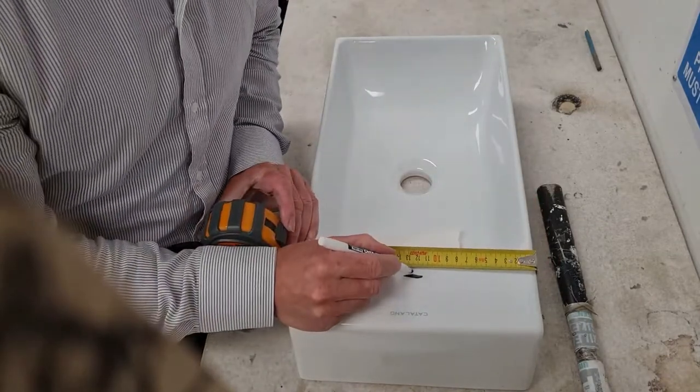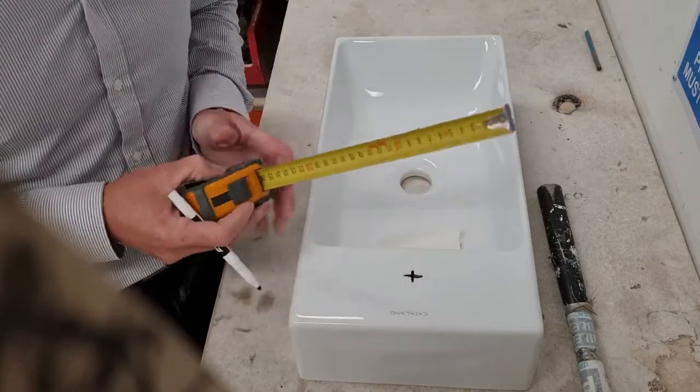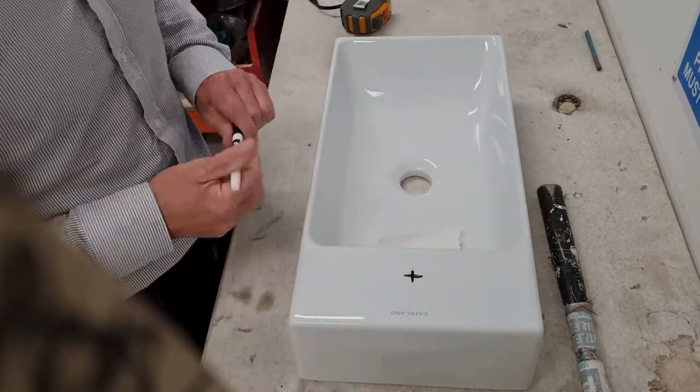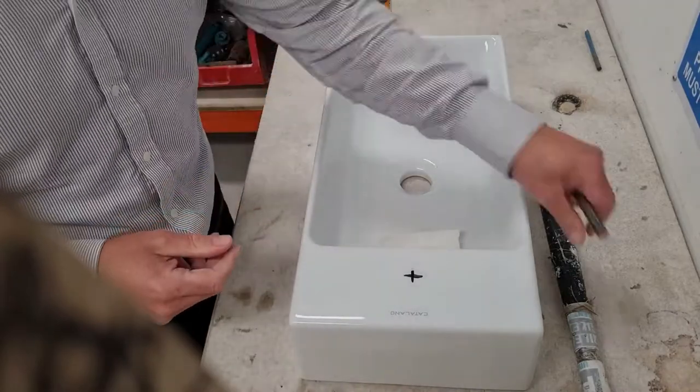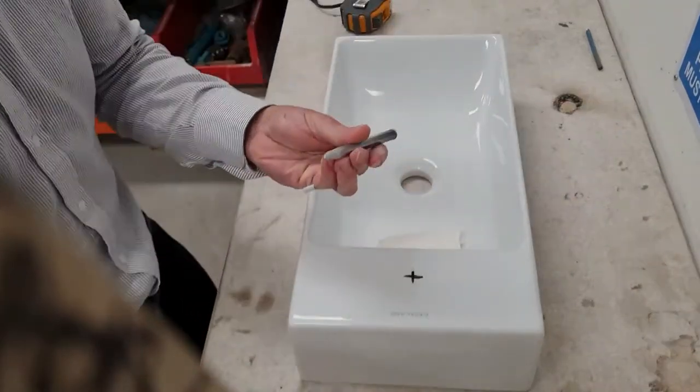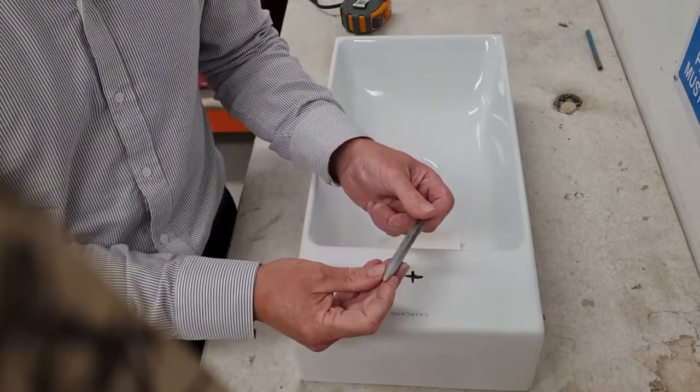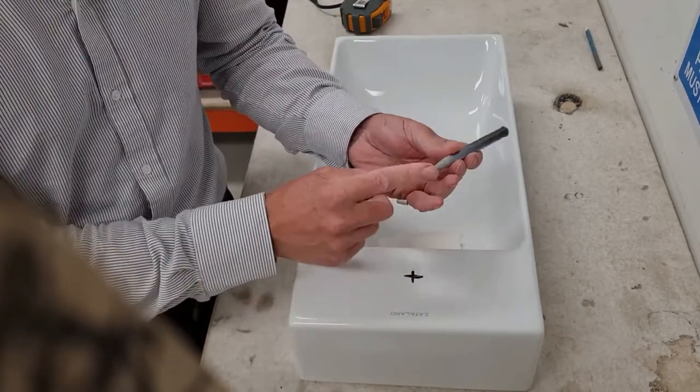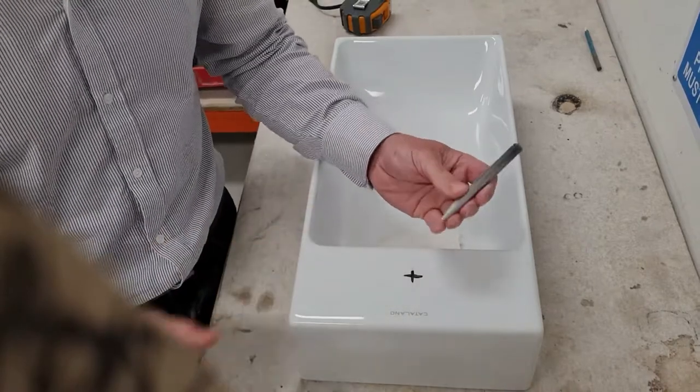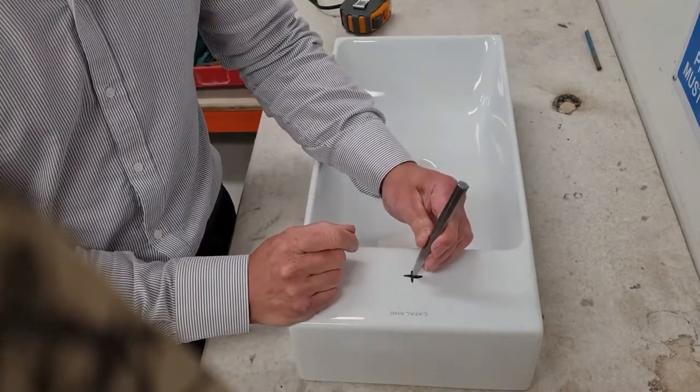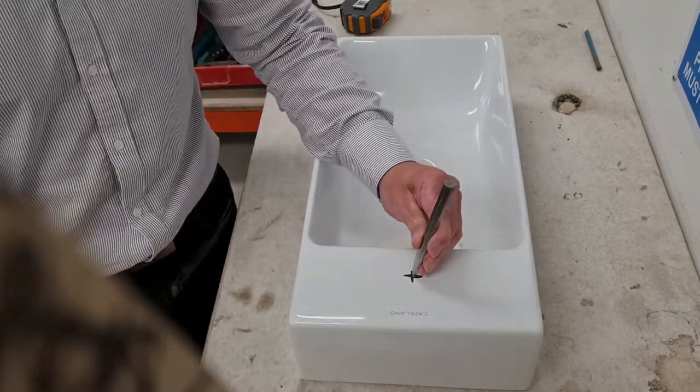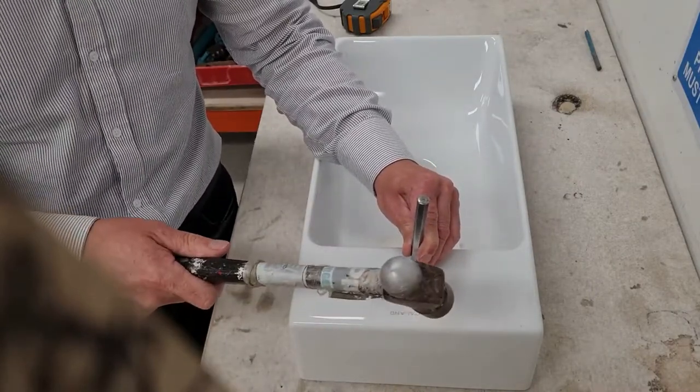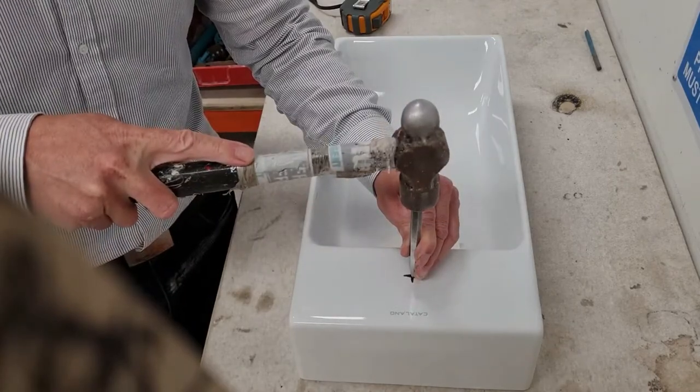Okay, so this can be the daunting part if you haven't done this before. Now what we've got here, this is just literally a nail punch. It's quite well worn, as you can see, over the years it's got quite rounded off, but it should be fine if you have a standard nice sharp nail punch. So what you're going to do is place the punch straight in the center and simply give it a tap.